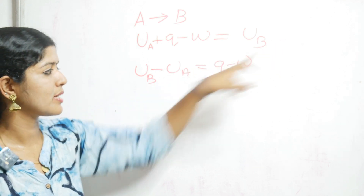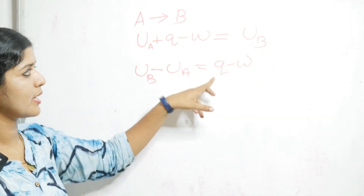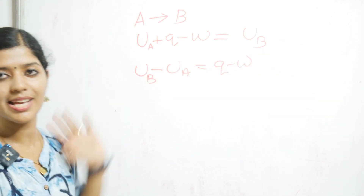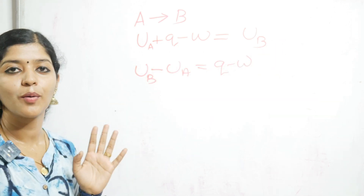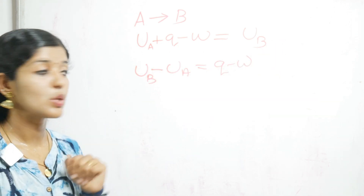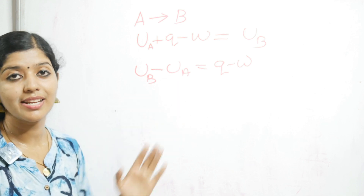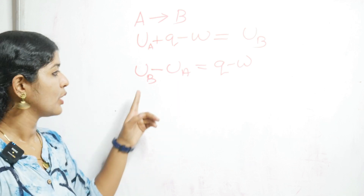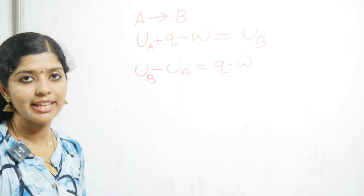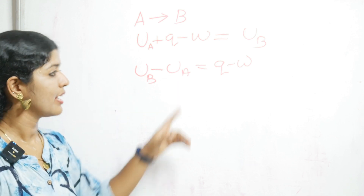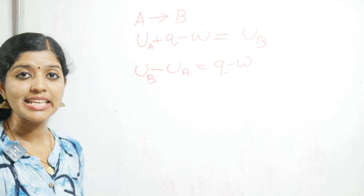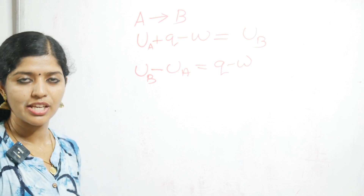So U_B minus U_A — U_B is the final energy and U_A is the initial energy. Their difference is delta U, which equals Q minus W. This is equation 1.